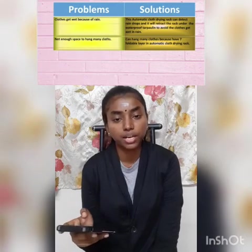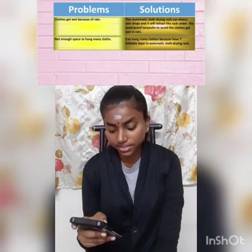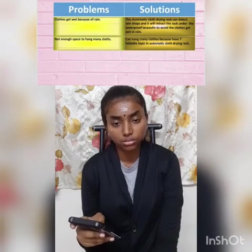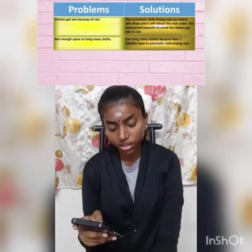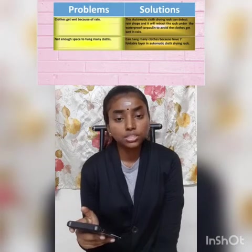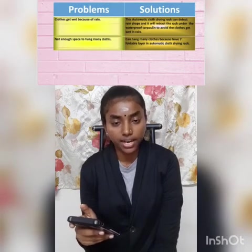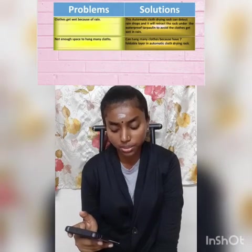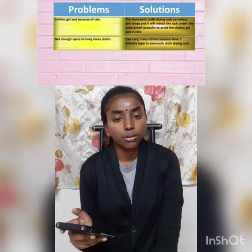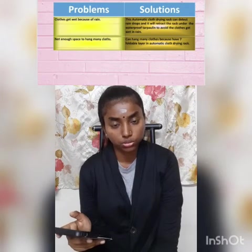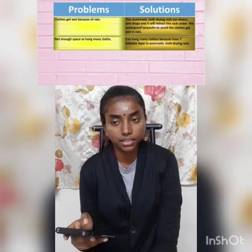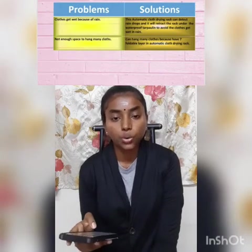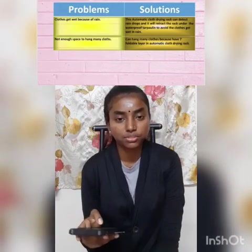The next problem with using a normal cloth drying rack is not having enough space to hang many clothes. By using my automatic cloth drying rack, we can hang many clothes because it has seven foldable layers to put our clothes. It is very big and suitable for a family with many members, even those who have five children.